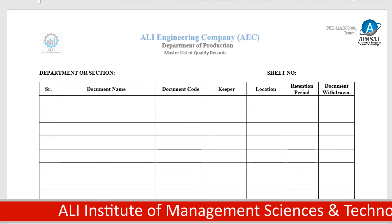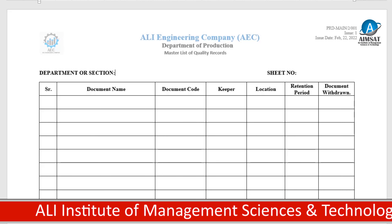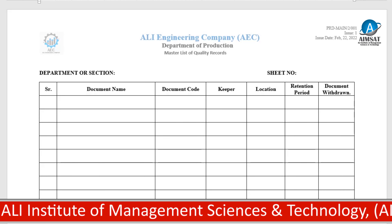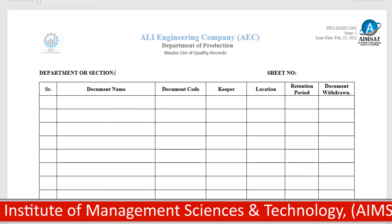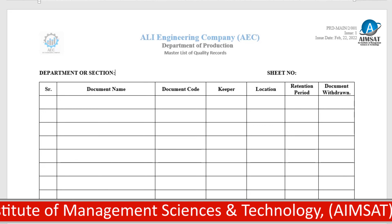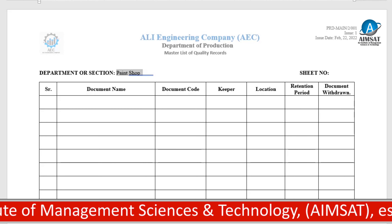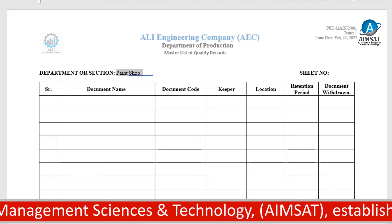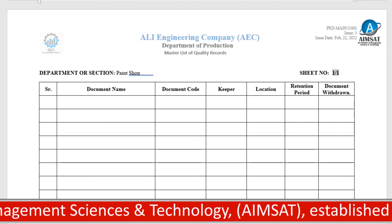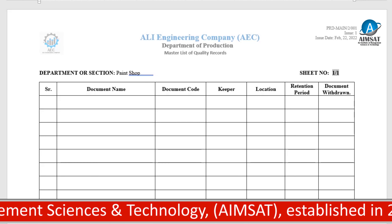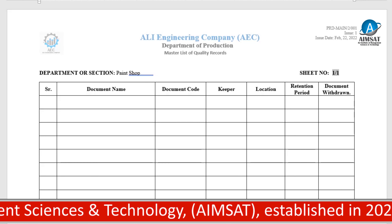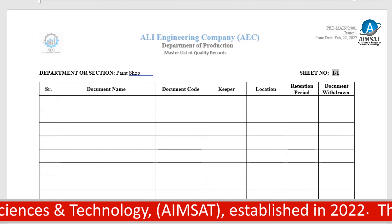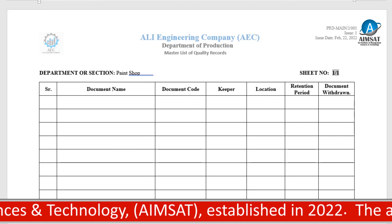The management representative distributes this quality records list to all departments and sections within the department. The main custodian of this document is the management representative. In this case, the department is Production and the title of the document is Quality Records. The Department of Production Master List of Quality Records — see the control numbers. The paint shop is the section within the main production department, and the sheet number is 1 of 1.